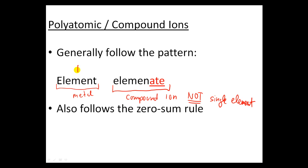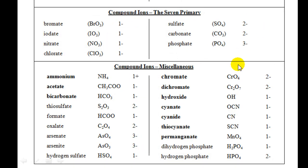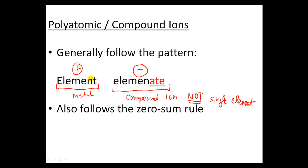Now because metals are generally positively charged whereas the compound ions tend to be negatively charged — as you can see, most of these are negative except for ammonium, which is the only exception — they are able to follow the zero-sum rule as well, where all the positives must add up to all the negatives to sum to zero.